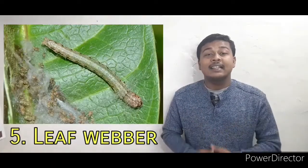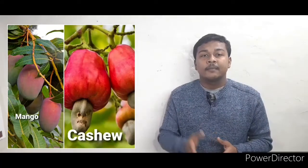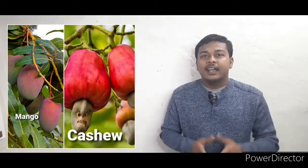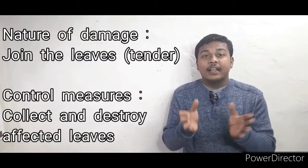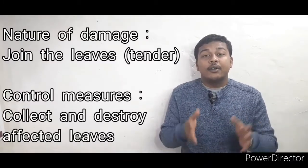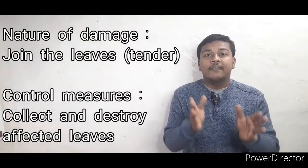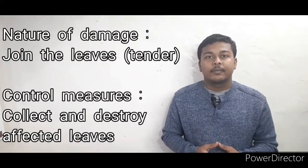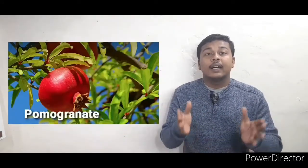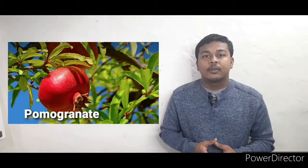The next pest is the leaf weaver. The affected crop plants are mango and cashew nut. As the name suggests, leaf weavers join the leaves together. To control this, collect and destroy the affected leaves.